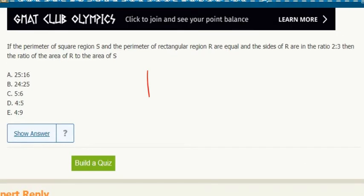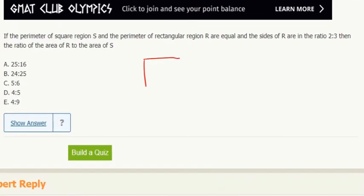So the perimeters are the same. I would choose the numbers here and try to make it nice. Square region S, rectangle region R. I would say okay, make the perimeter of S, make the perimeter 20. Okay, that means that's 5, 5, 5, 5.